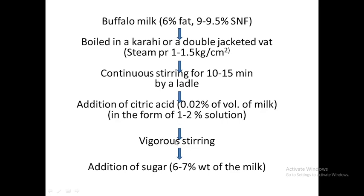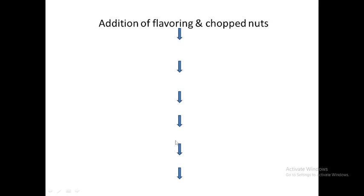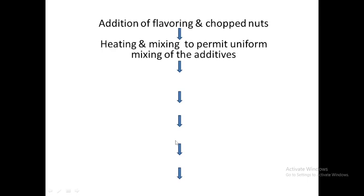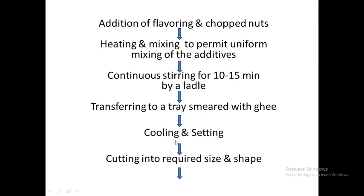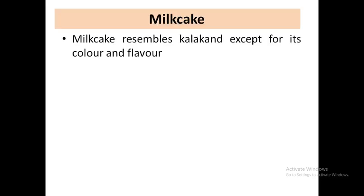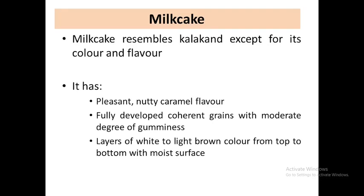After citric acid addition, vigorous stirring continues and we add six to seven percent of sugar. Everything then remains the same — continue stirring, then transfer to a greased tray. The two differences from burfi are: first, we add citric acid; second, we add usually six to eight percent sugar in the case of kalakand — slightly one to two percent more sugar as compared to burfi.